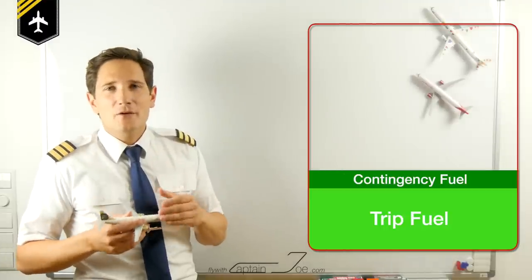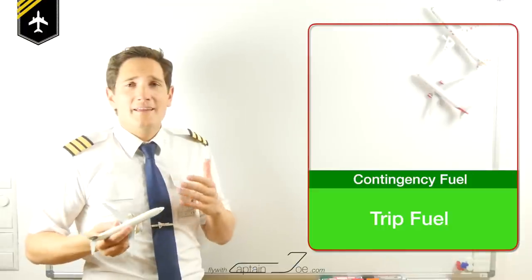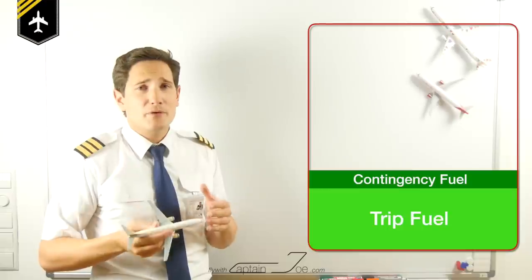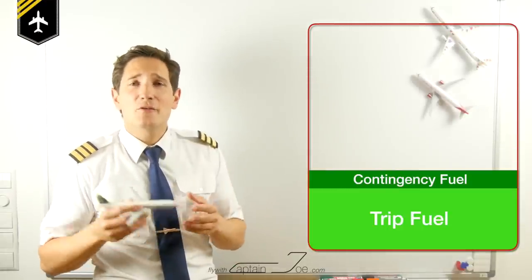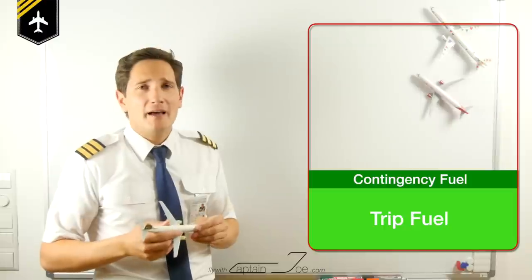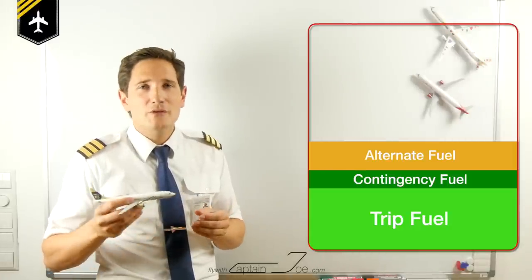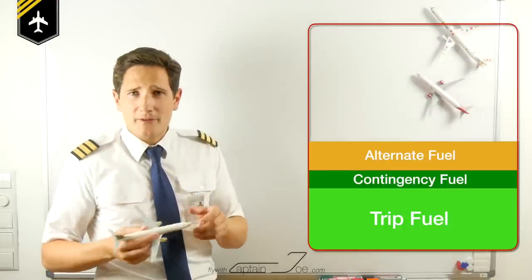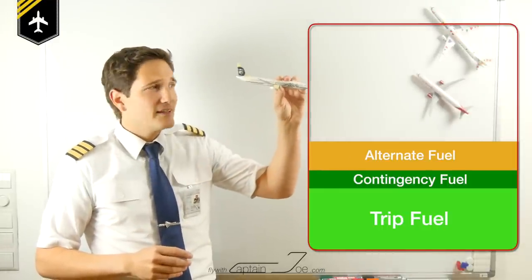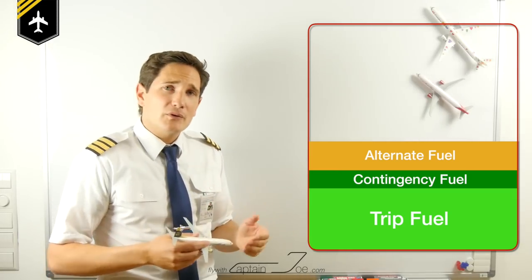Now let's imagine you're on final approach at Faro and a preceding aircraft has blocked the runway due to a burst tire. You would have to perform a go-around and wouldn't be able to land at your destination. Therefore you add the so-called alternate fuel into your tank. The alternate fuel will get you to your alternate aerodrome chosen during your briefing. The missed approach at Faro is part of the alternate fuel, plus the climb, cruise, descent, and approach to the alternate aerodrome — in our case, Sevilla in Spain.